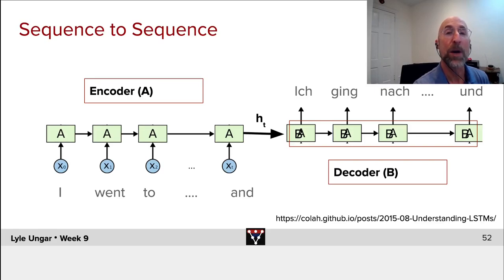At each point, this network is being trained to predict one more word. It does that until it hits something like an end of sentence token. So it will be a special token saying, stop, we're done.